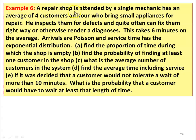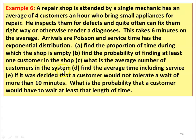Example number 6. A repair shop attended by a single mechanic has an average of 4 customers per hour bringing small appliances for repair. He inspects them and can often fix them right away or render a diagnosis, taking 6 minutes on average. Arrivals are Poisson and service time has exponential distribution. Subdivision A: find the proportion of time during which the shop is empty. Subdivision B: find the probability of finding at least one customer in the shop. Subdivision C: what is the average number of customers in the system? Subdivision D: find the average time including service.